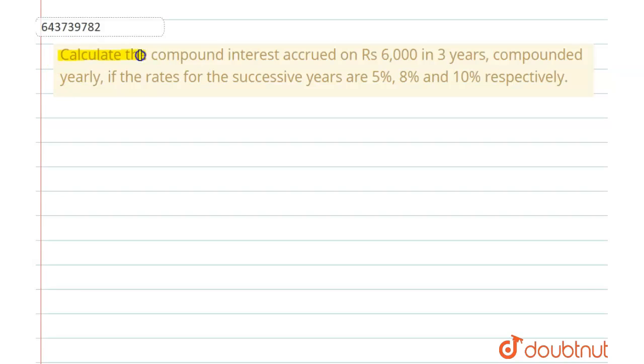Calculate the compound interest accrued on Rs. 6,000 in 3 years, compounded yearly. The rates for successive years are 5%, 8%, and 10% respectively. So in this question, the given parameters are: principal is given as 6,000 rupees.